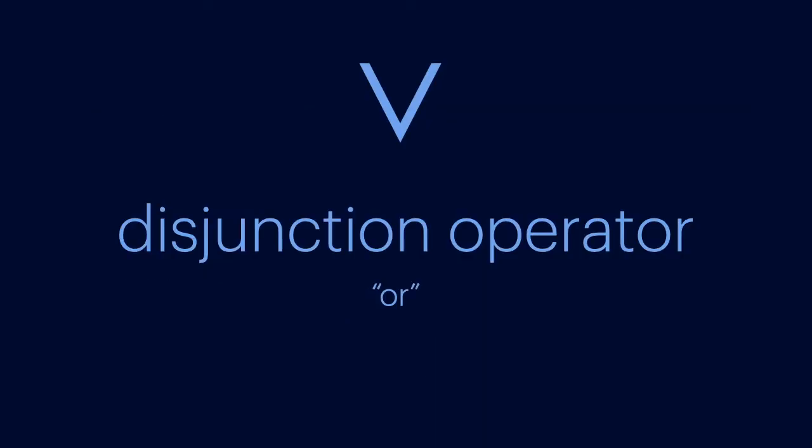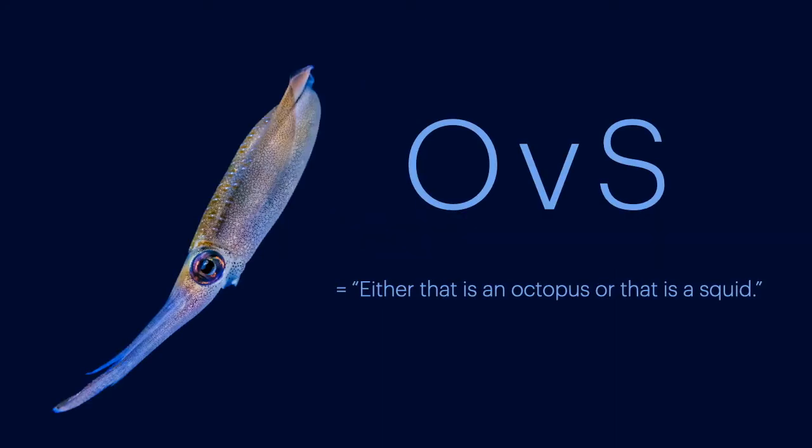Next, we have the disjunction operator. Its symbol is usually the wedge. This operator reads as the English OR, as in, either that is an octopus or that is a squid.